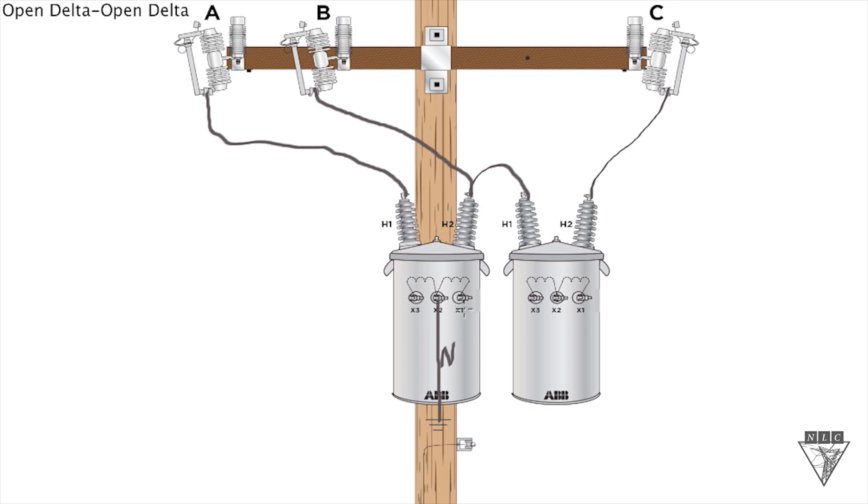Now from this point, you need to take the X1 off this transformer that you're utilizing the X2 bushing and tie it to the X3 on the transformer there on the far right. Now we can just draw our hot legs.